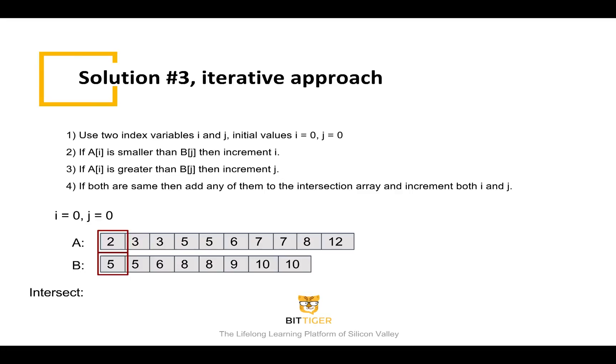Now we will introduce another solution which has a linear time complexity. We call this method a two-pointer method. We use two index variables, i and j, which are both initialized as zero in the beginning. For example, in this problem, i and j are both equal to zero. The two pointers are pointing to the first elements of the two arrays.